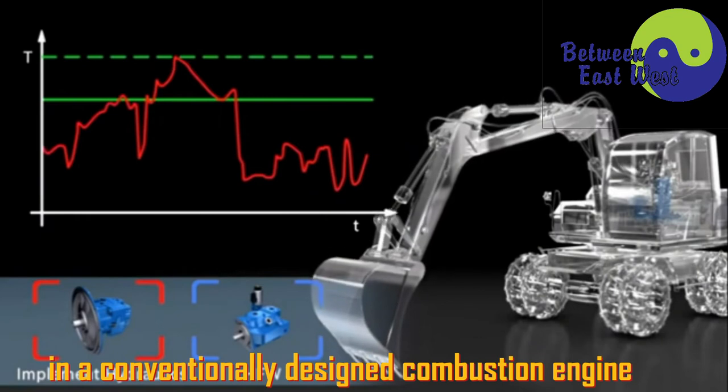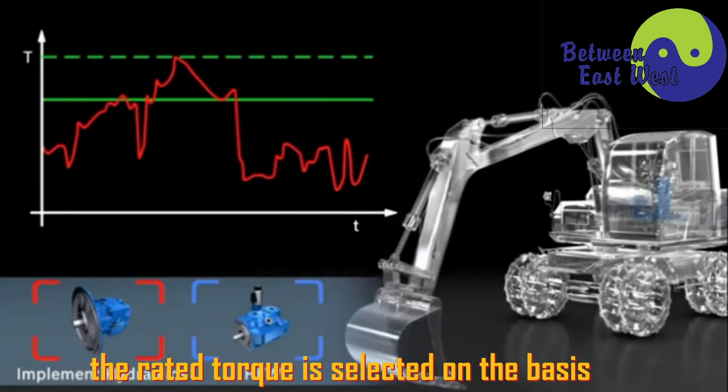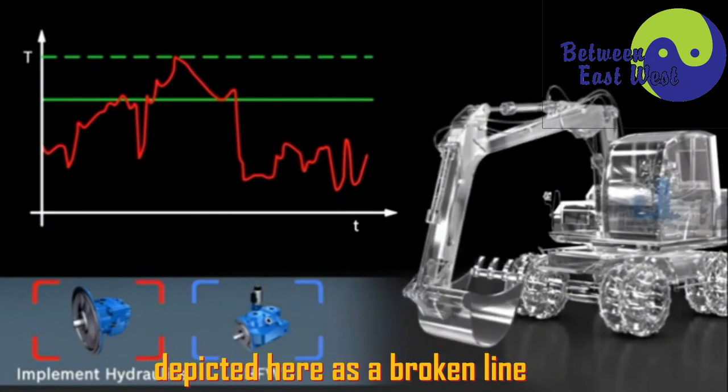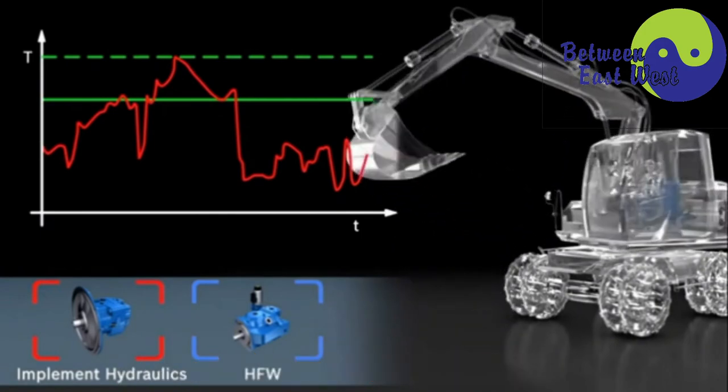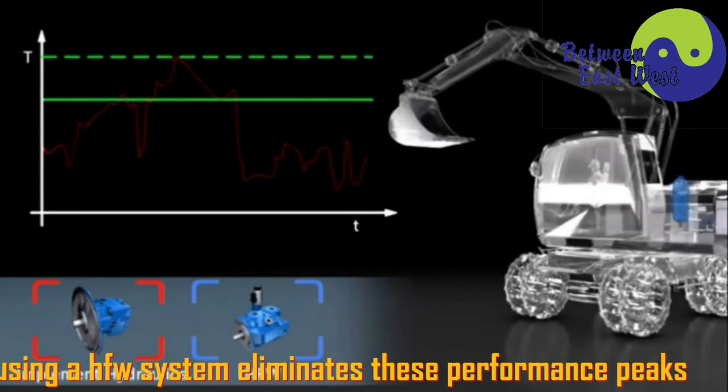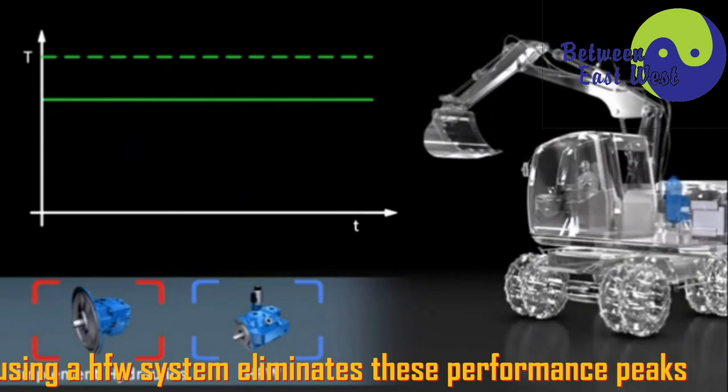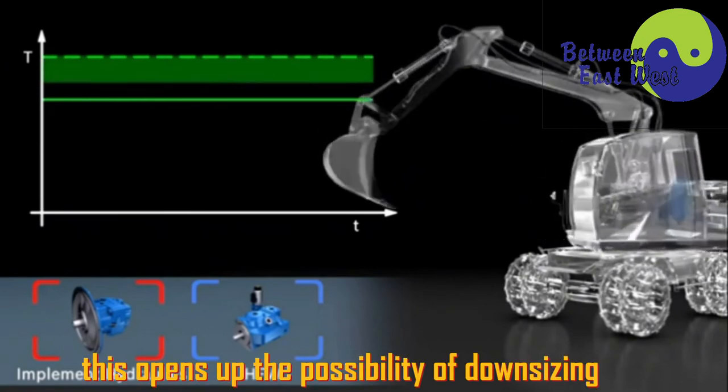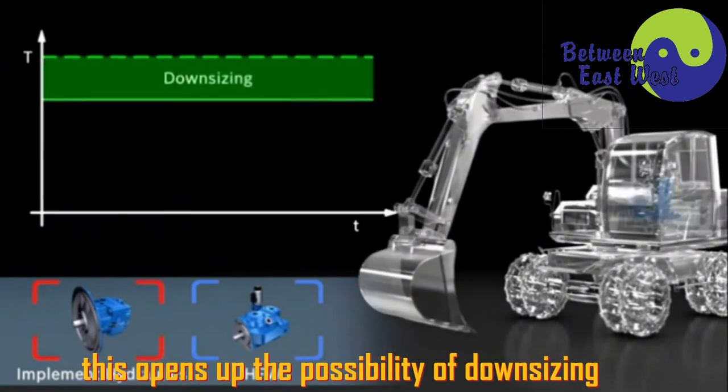In a conventionally designed combustion engine, the rated torque is selected on the basis that it can deal with the power peaks, depicted here as a broken line. Using an HFW system eliminates these performance peaks, so that a smaller rated torque is sufficient. This opens up the possibility of downsizing.